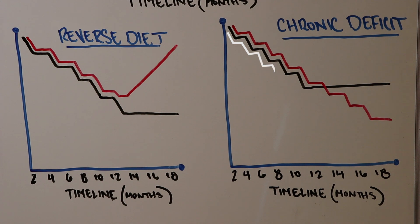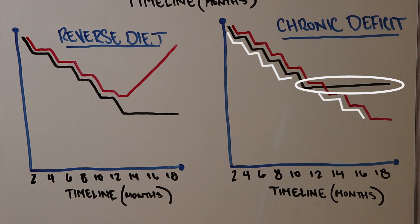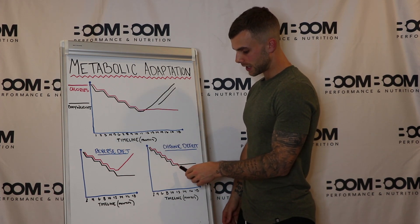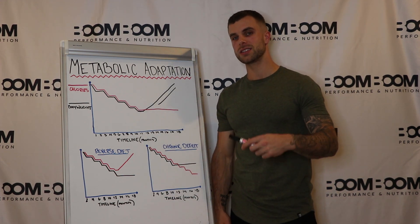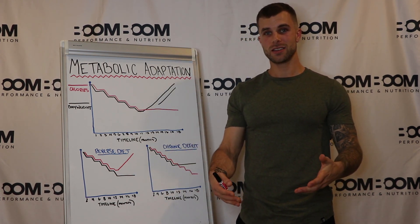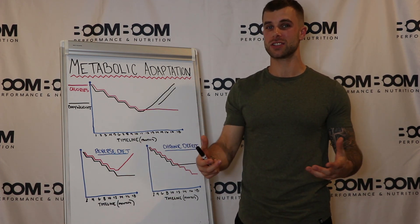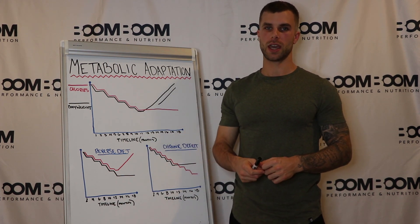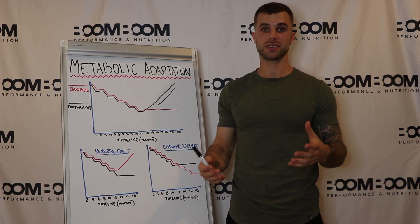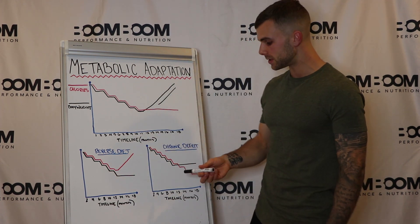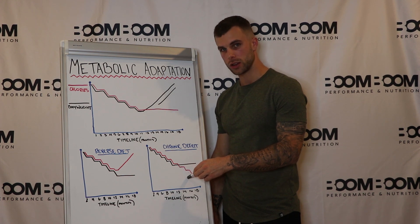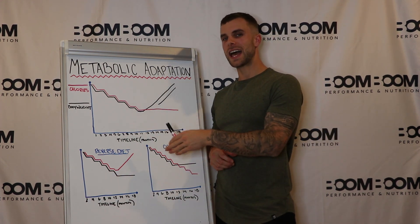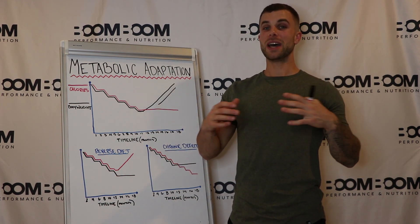The second graph shows the same process — dropping calories and weight over time. Around the one-year mark, body weight plateaus, which is common, so we drop calories again. This is where we see the cross section in the graph: we drop calories again yet body weight doesn't change. Naturally we drop calories again wanting that weight loss, yet body weight never changes. This is another form of metabolic adaptation — your metabolism has adapted to a lower set point, your endocrine system is not in a healthy place, and no matter how far you drop calories it will not create weight loss.